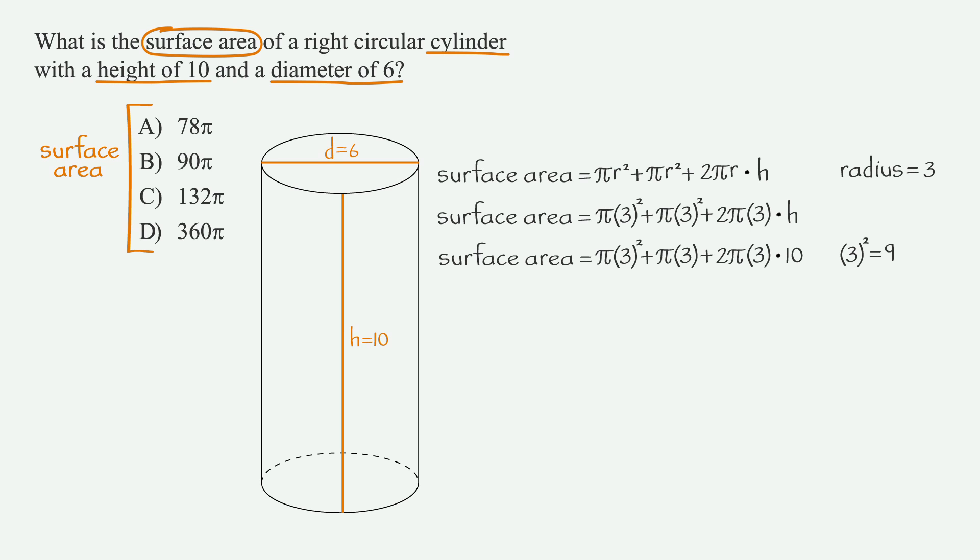3 squared is 9. So we have 9 pi plus 9 pi plus 2 pi times 3 times 10. 2 pi times 3 gives us 6 pi. And then we multiply by 10 to get 60 pi. And we get 9 pi plus 9 pi plus 60 pi, which is 78 pi. So give yourself a round of applause right after you circle answer choice A.